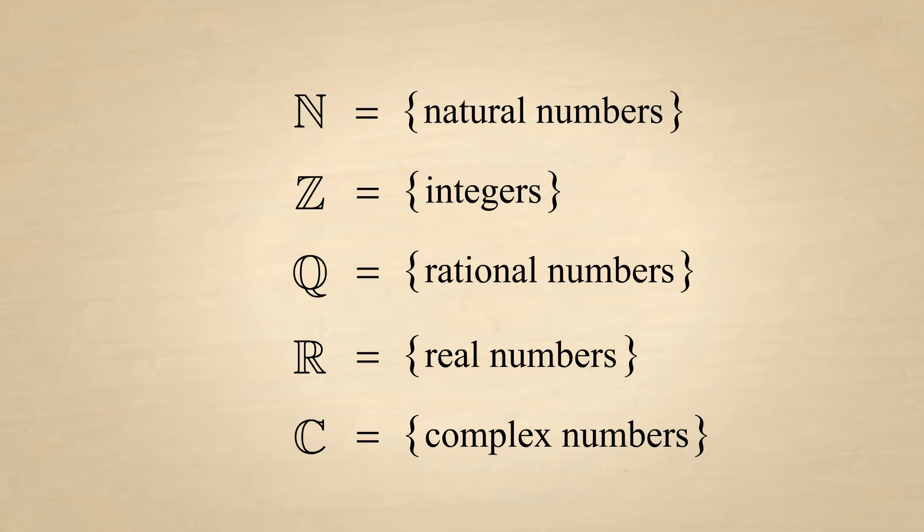We can indicate that an element is a member of a set by using the symbol for set membership. For instance, we can say that the element 1 is a member of the set of natural numbers. We can also indicate that an element is not a member by using the negation of this symbol. For example, we could state that 1 half is not a member of the set of natural numbers.